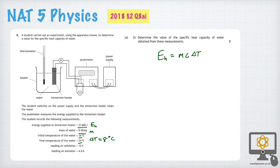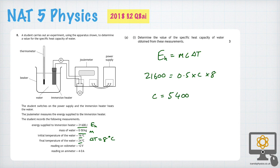So from that information we can solve the problem. 21,600 joules of energy is put in, it raises 0.5 kilograms of water of a specific heat capacity C by a temperature of 8 degrees Celsius. From that we can determine that the value of C is 5,400. We must remember the units are joules per kilogram per degree Celsius.